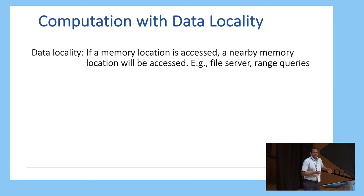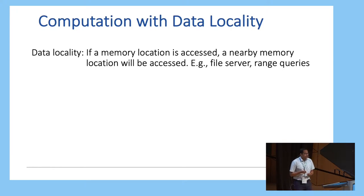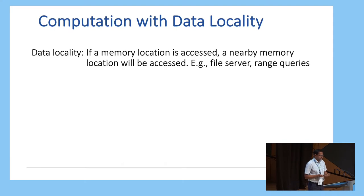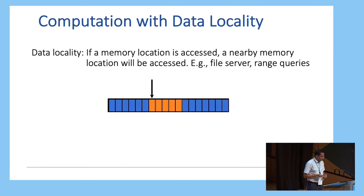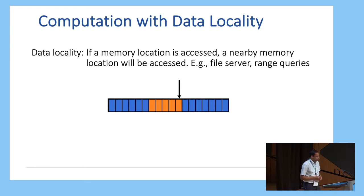Separately, in systems, another notion that is very important is data locality. What is data locality? If a memory location is accessed, a nearby memory location will be accessed soon enough. For instance, if you have a file server where a file spans five blocks, then if you are accessing the entire file, after accessing the first block, you will end up accessing the next four blocks as well. You will have a similar observation for range queries.